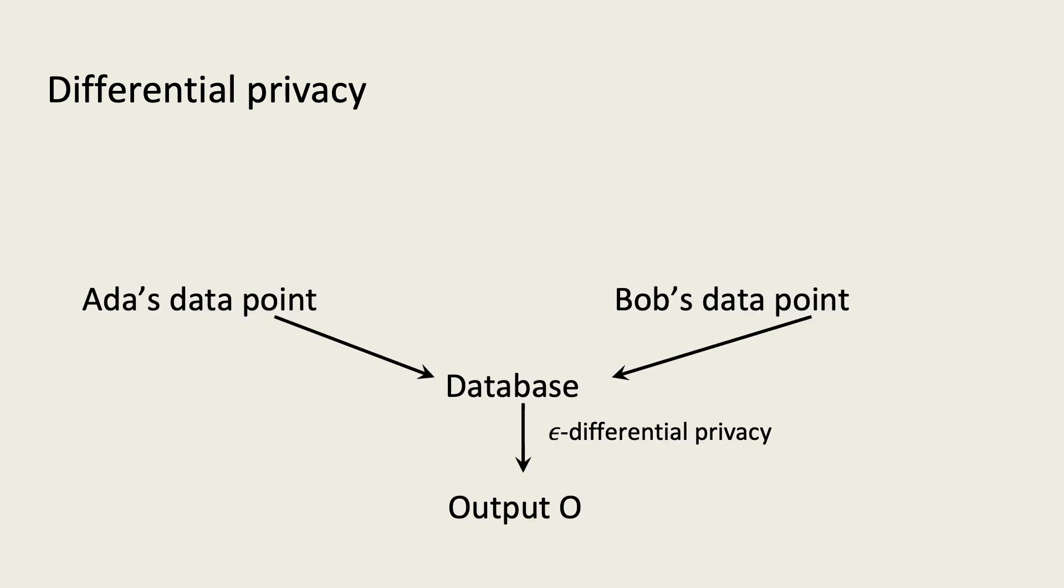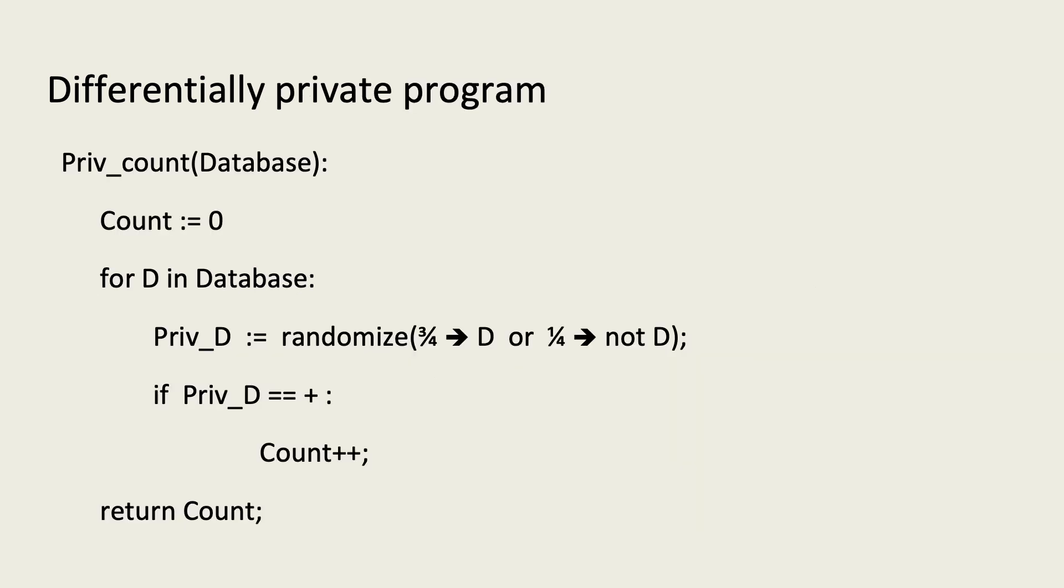Suppose that the output is a differentially private count of the number of people with a genetic mutation. The Laplace mechanism would be a natural choice for such a counting task. But to make our analysis more straightforward, we'll instead use one based on the randomized response mechanism, albeit computed by a single central database. This program takes a list of data points, each of which records whether a person is positive or negative for the mutation.